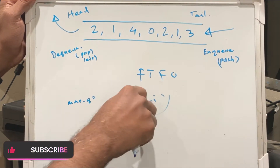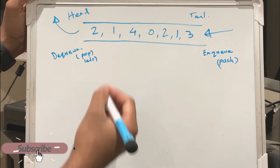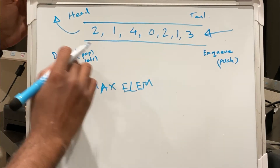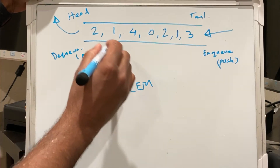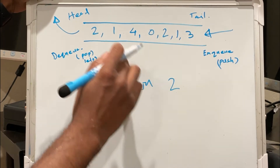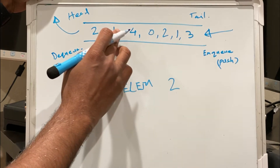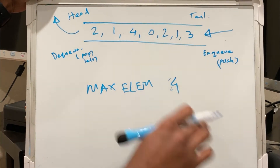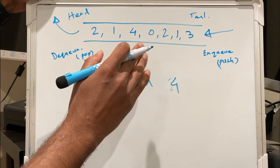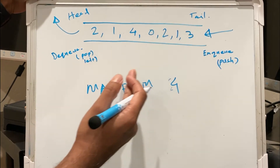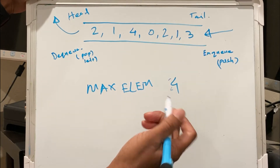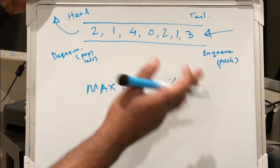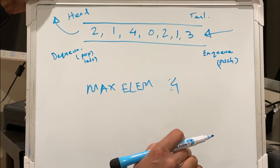So let's get started. The brute force algorithm would be to keep track of the max element whenever we do an enqueue or dequeue operation. When we enqueue 2, the max is 2. When we enqueue 1, the max is still 2. When we enqueue 4, the max is 4. When we enqueue 0, the max is still 4. Supporting only enqueue is easy — whenever we push a new element, we compare it to the current max and update if it's greater.